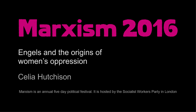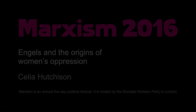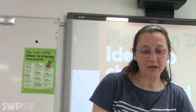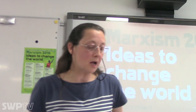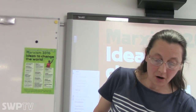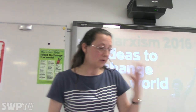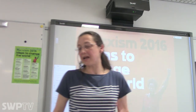We've already started talking about some of the issues and contemporary debates around the question of women's oppression and the struggle for women's liberation. I'm going to be talking about a book written in 1884 by Engels, the collaborator of Karl Marx, because Engels has something very important to say about our understanding of women's oppression, how it came about, and therefore what we should do about it.